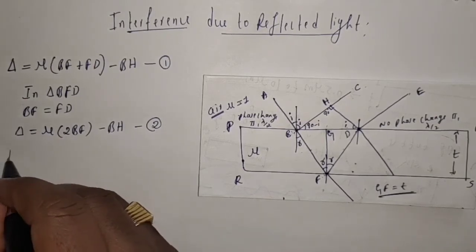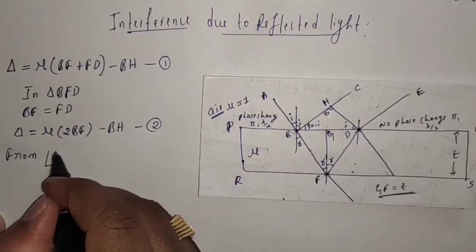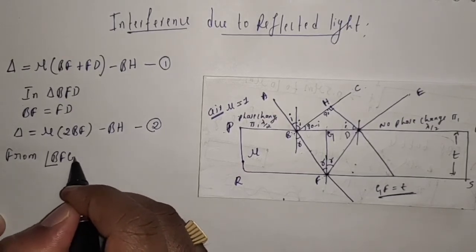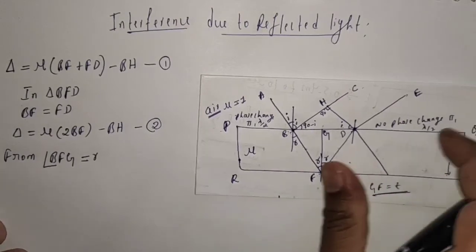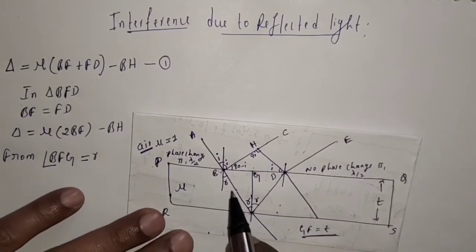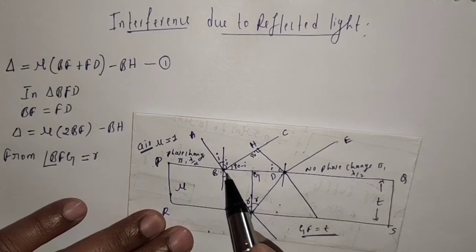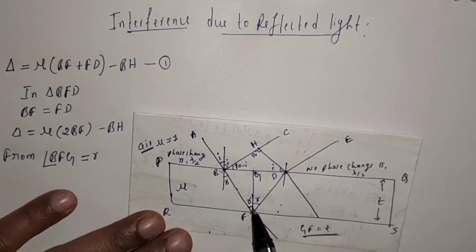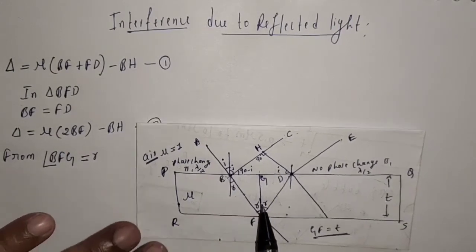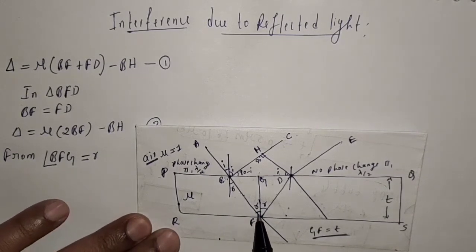From angle BFG equals R — that is, in triangle BFG, angle BFG equals R. Then we can write cos R equals GF divided by BF. Here GF is the thickness, that is GF equals t.